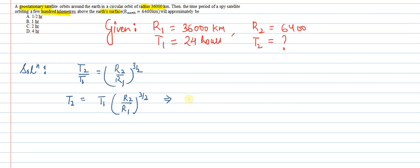This equals 24 hours times (6,400/36,000) to the power 3/2. Simplifying, the zeros cancel out. 36 goes into this, we'll cancel it out - this becomes 18, then 9 and 16. When we simplify this, it comes out to be 1.7 hours.